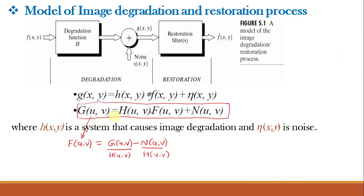From the model of image degradation and restoration, the degraded image G(u,v) is equal to H(u,v) multiplied by the undegraded image F(u,v) plus N(u,v), where N(u,v) is the noise added to the image and H(u,v) is the degradation function representing blur or artifacts. Our aim is to find the undegraded image F(u,v). Rearranging, F(u,v) equals G(u,v) minus N(u,v) divided by H(u,v). If noise is not present, we have full knowledge of the degradation function and can apply inverse filtering.